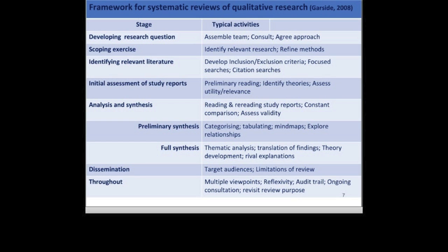You might do a scoping exercise to identify relevant research and refine the methods. The step of identifying relevant literature will refine search approaches to develop inclusion-exclusion criteria, develop focused searches, and use alternative approaches such as citation searches and contact with experts. Once you've identified the studies which meet the inclusion criteria, the process of analysis and synthesis can start. All the papers would be read in a preliminary reading to identify theories and assess the utility and relevance of different papers to the research question.